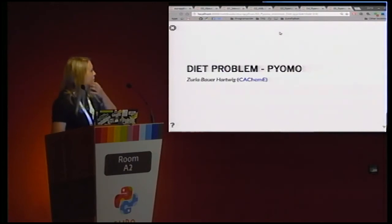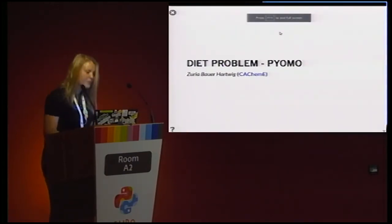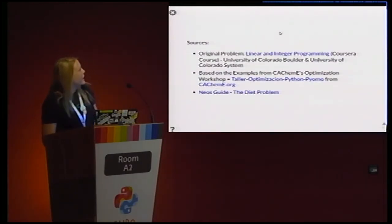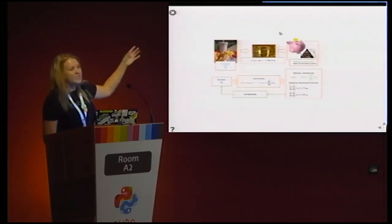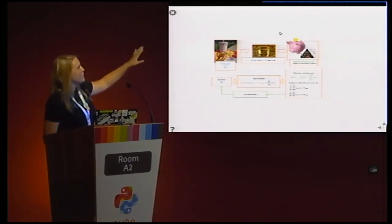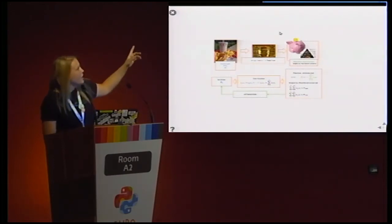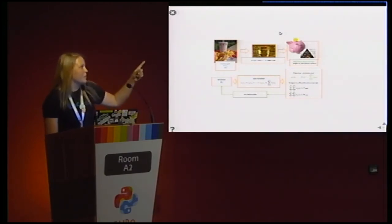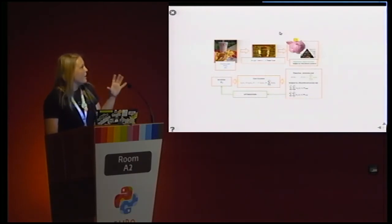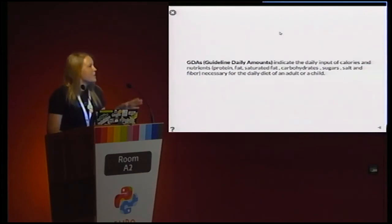We are sorry for so much theory, but if we don't show you that, you will not understand what I'm going to show you now. I am now going to show you the practical part. We are going to improve our diet. Our problem, like Daniel explained before, has two cases. In the first case, we set our menu from a fast food restaurant and we want to minimise the cost while eating the healthiest way possible. We have a lot of constraints and we have to find the optimum solution.